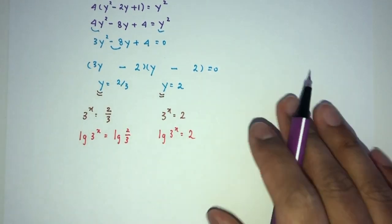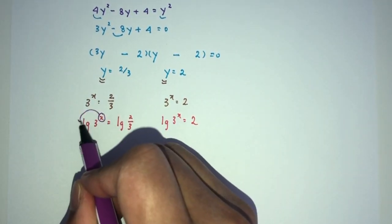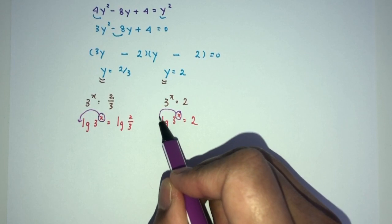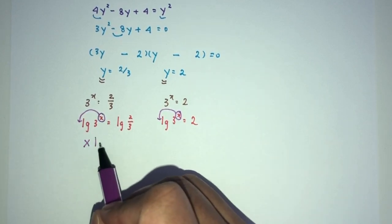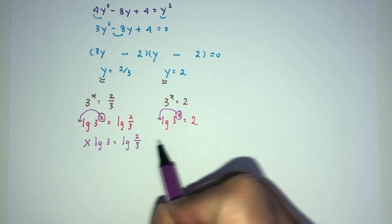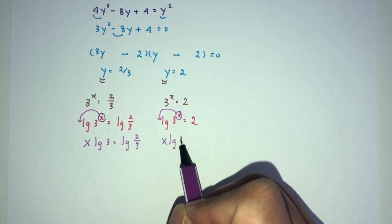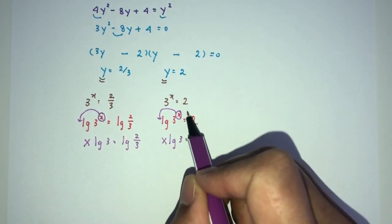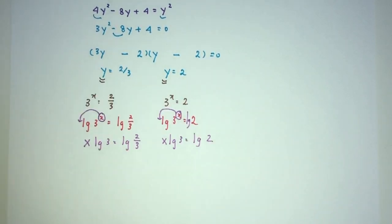Now, by the laws of logarithms, we can bring this down in front. Bring this down in front as well. x log 3. That will be log 2 over 3. x log 3. That will be, here I'm missing log here, log 2.